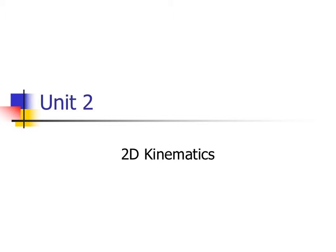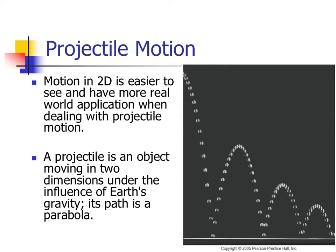We'll continue talking about two-dimensional kinematics. Motion in two dimensions is probably sometimes easier to see with slow-motion cameras. Taking pictures very quickly and keeping them there allows us to see things more clearly.